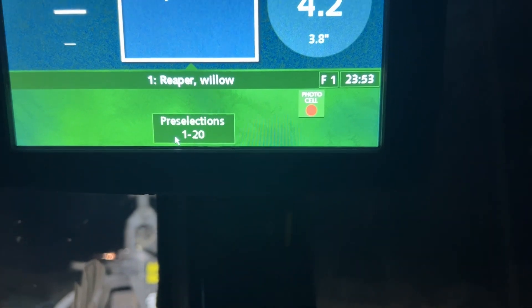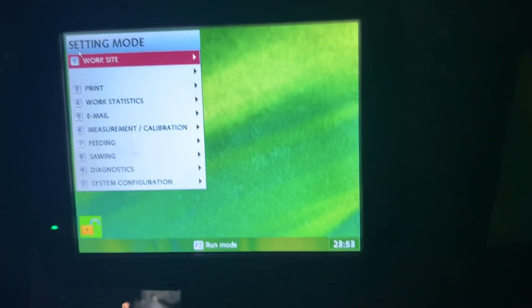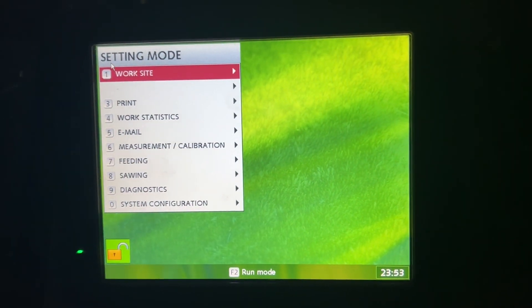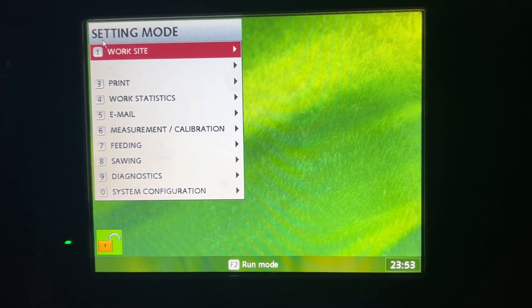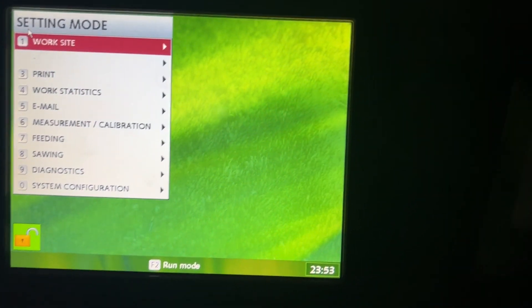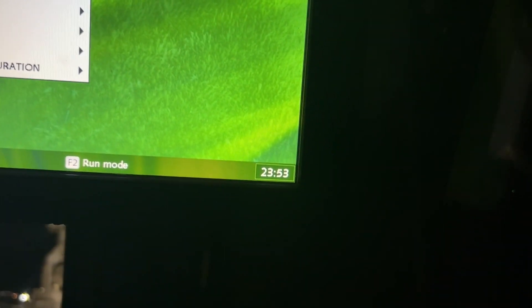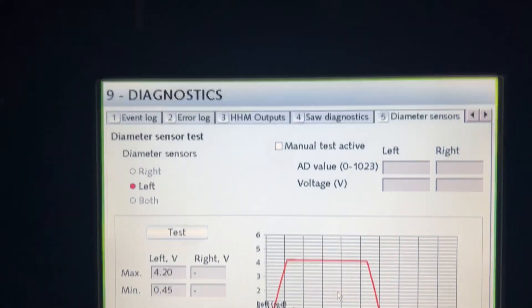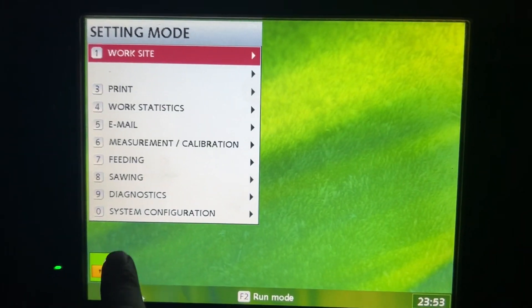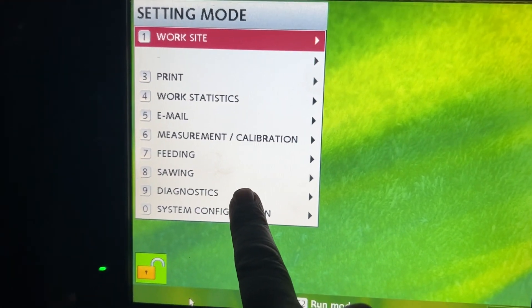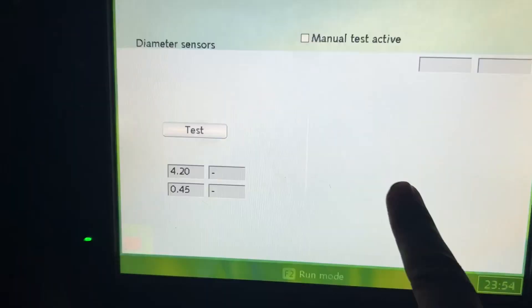First things we are going to do is we are going to hit the arrow on our touchscreen, or control A on your keyboard. You are going to come down to diagnosis and go to your diameter sensors.